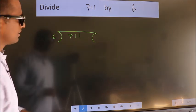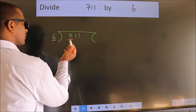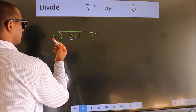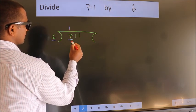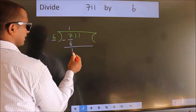Next. Here we have 7, here 6. A number close to 7 in 6 table is 6 times 1 is 6. Now we should subtract. We get 1.